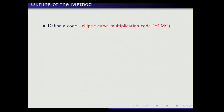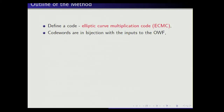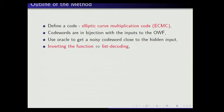Let me describe the method used to prove the security result. Our method is based on defining a special code. We use the oracle to transform the problem of inverting the function into a list decoding problem — a coding theory problem. We define a special code, which we call the elliptic curve multiplication code, or ECMC, whose codewords are in bijection with the points on the group that are the input points to the function. We use the oracle to construct a noisy codeword corresponding to the hidden point, and inverting the function then means list decoding.